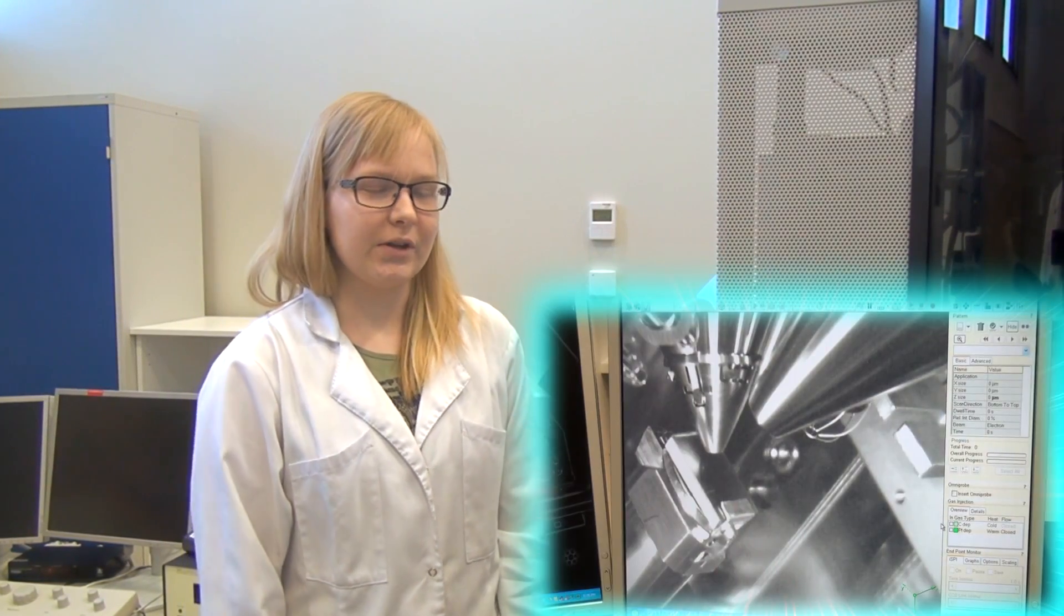In case you didn't know, the focused ion beam is created with this ion gun over here that is mounted to the scanning electron microscope. The other end of the ion gun is inside the microscope and aimed at the sample that we study. So, let us power up the ion gun and get started.